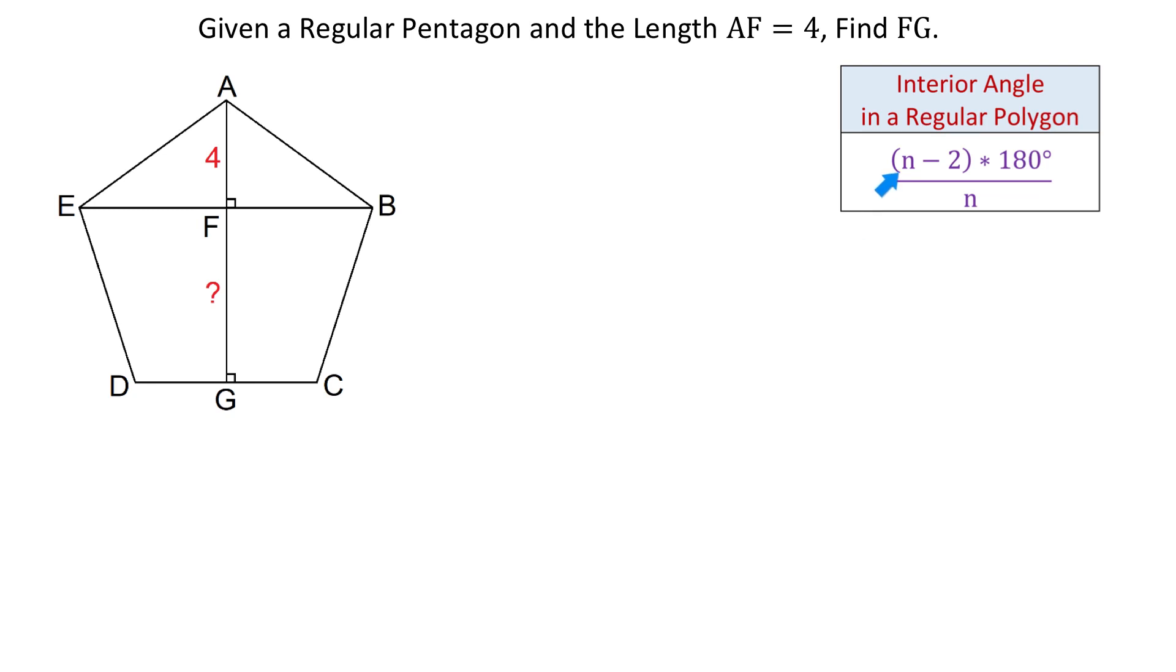Therefore, we will replace N with 5. So an interior angle in a pentagon will be 5 minus 2 multiplied by 180 degrees and divided by 5. All this will be equal to 108 degrees. So we can say that each of the 5 angles measures 108 degrees.